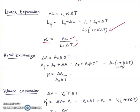Next is areal expansion: delta A is equal to A0 beta delta T. Beta is the coefficient of areal expansion. Beta is equal to delta A upon A0 delta T.